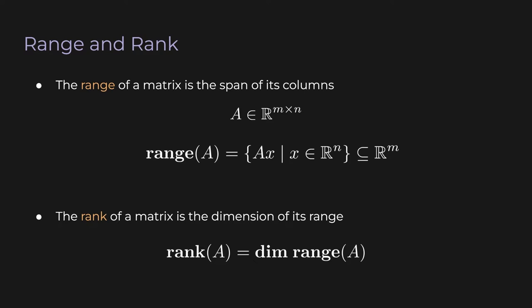The name 'range' makes sense because it's the set of vectors that can be hit by the matrix A. If some vector y in R^m is not in the range of A, then no vector x exists where y equals Ax. The rank, on the other hand, is just the dimension of the range — we can write dimension as dim, so rank(A) equals dim(range(A)). Note that the range of A is a subspace of R^m. This subspace could be m-dimensional, or less.